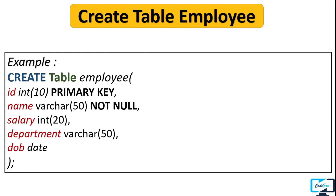Now let's create a table in the Codera database. The table is named employee and has five columns. The first is id, which is an integer and also the primary key. The next column is name, which is VARCHAR with size 50 — if the input exceeds 50 characters it will give an error — and it also has a NOT NULL constraint, meaning this column cannot be null. I have also created three more columns: salary, department, and date_of_birth.